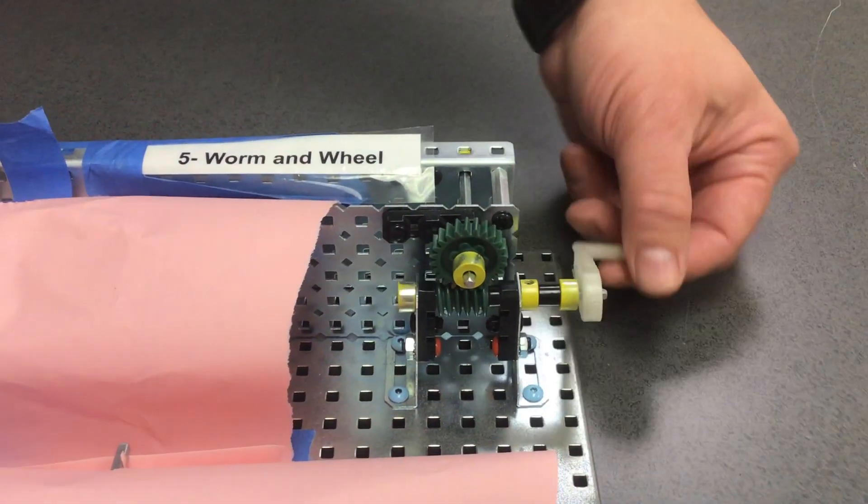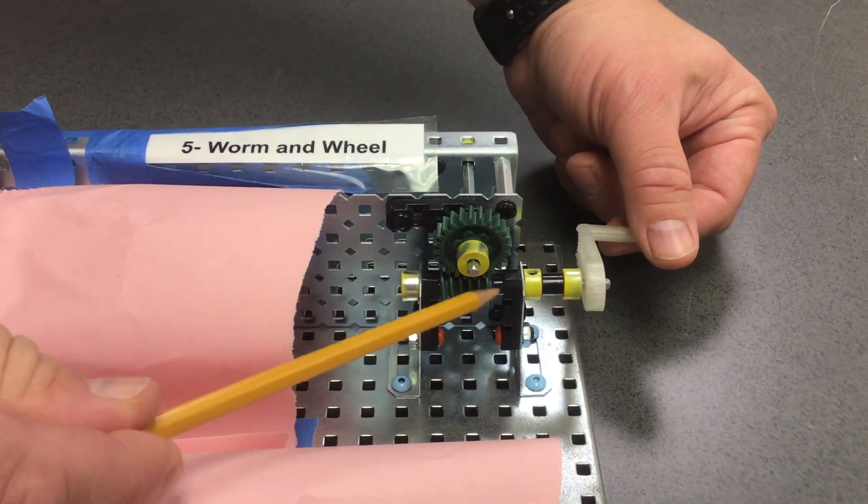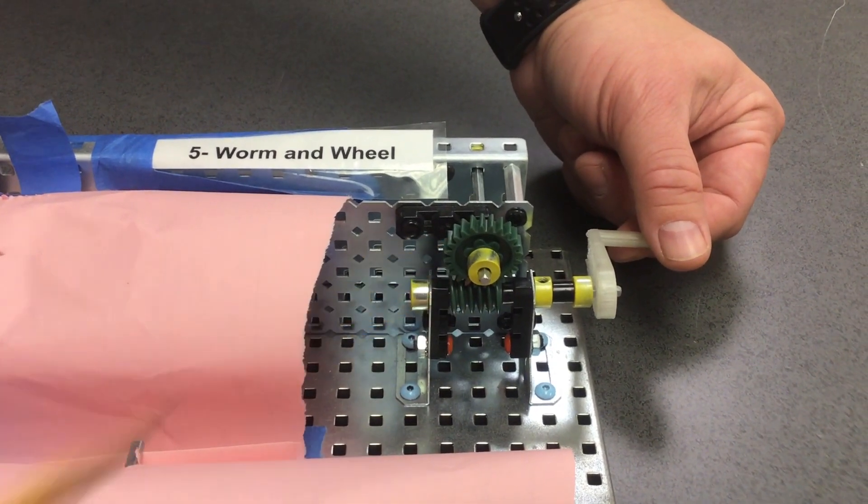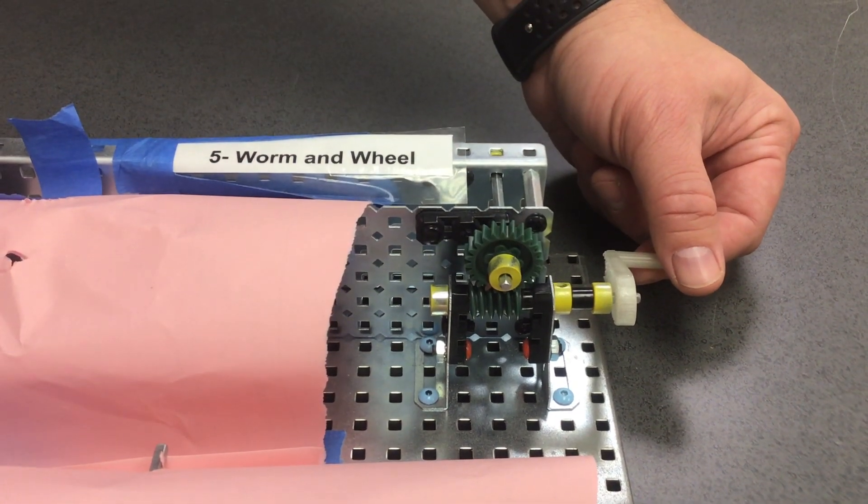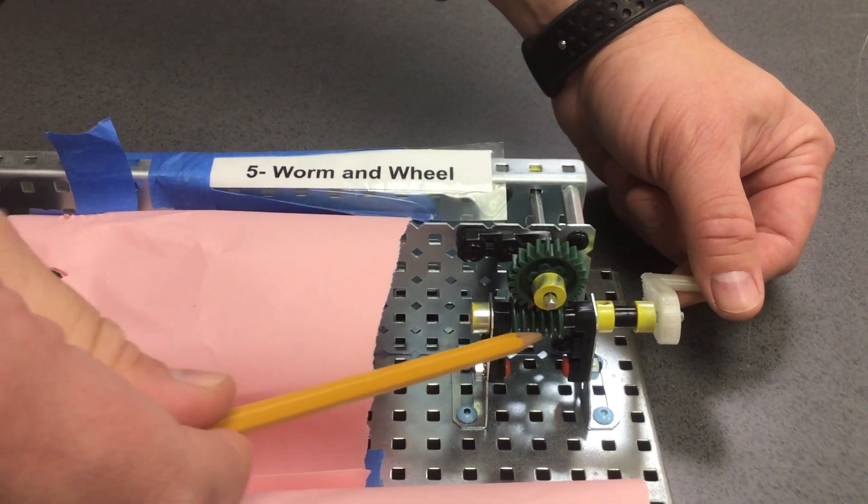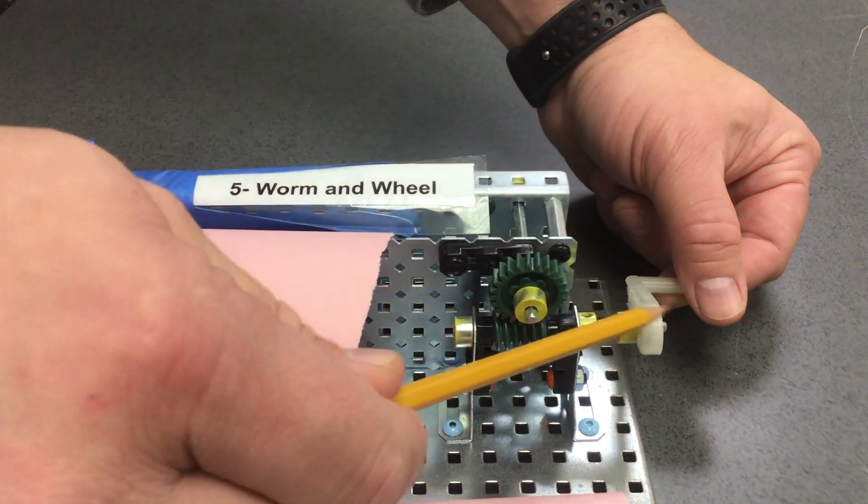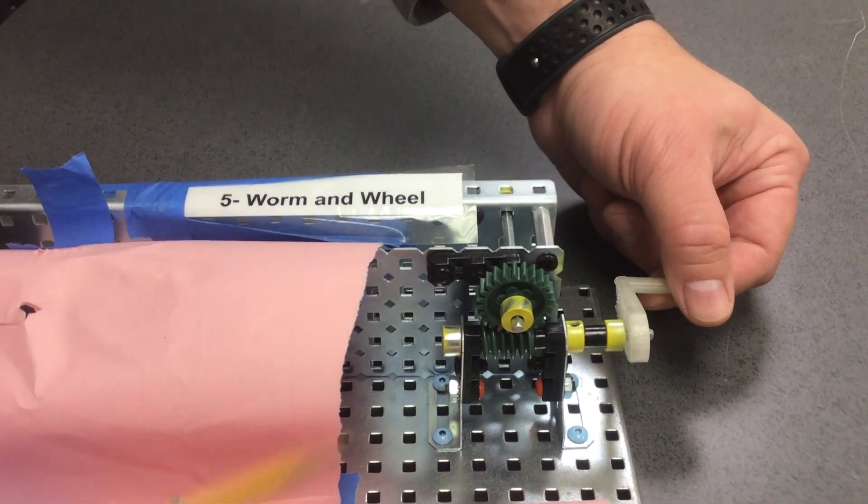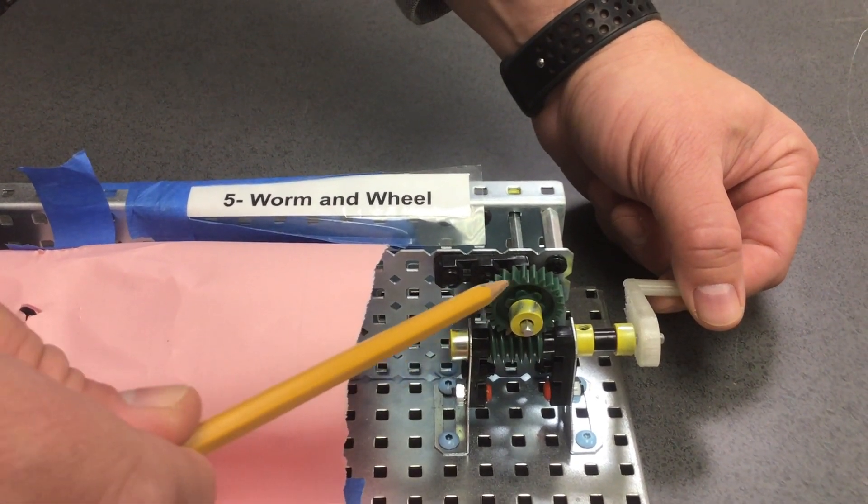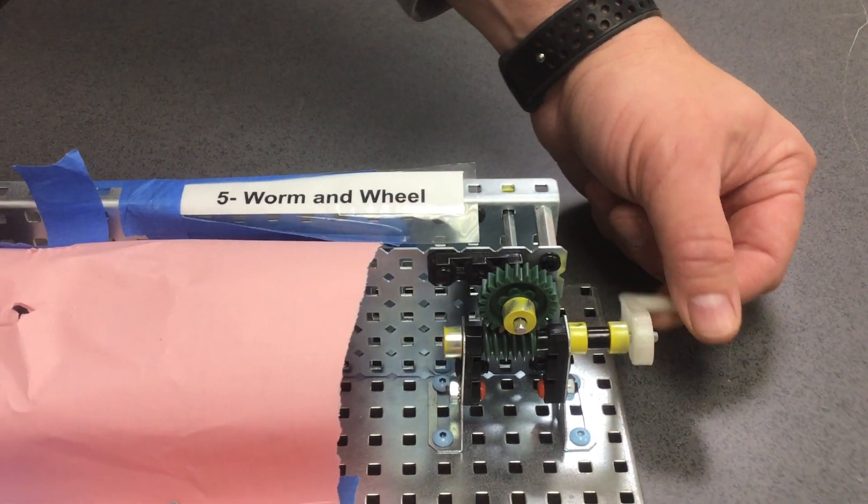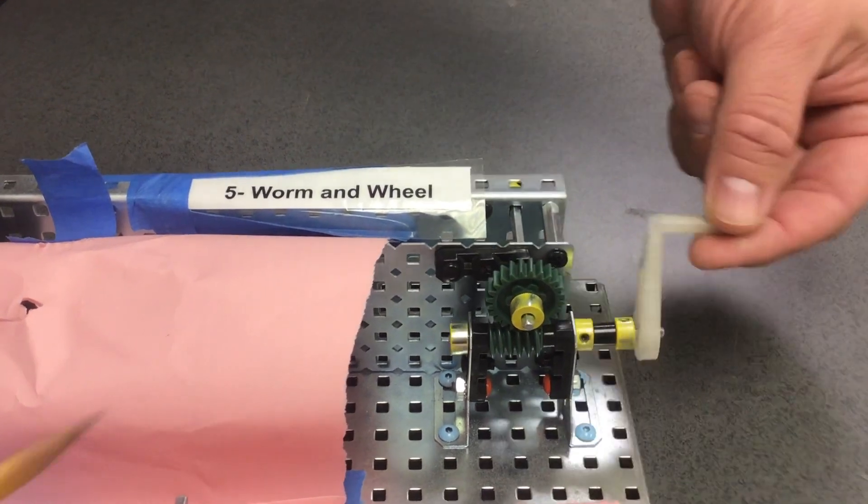Let's talk about the gear ratio. This worm acts like a gear with one tooth on it. It's a little bit weird but this single tooth means one full rotation. How many rotations will it take to make this 24 tooth gear go all the way around in one circle? Well let's take a look.